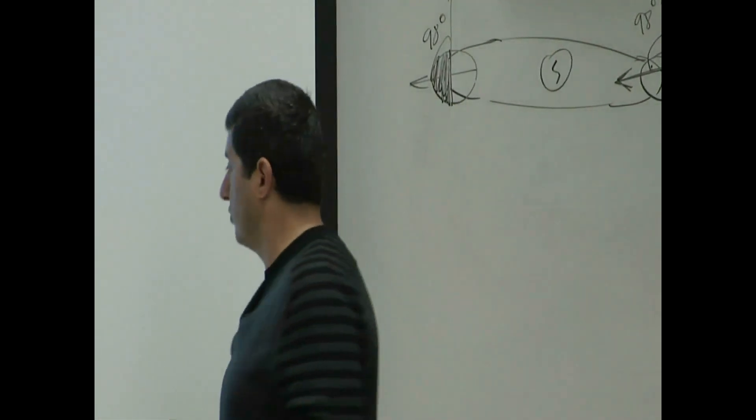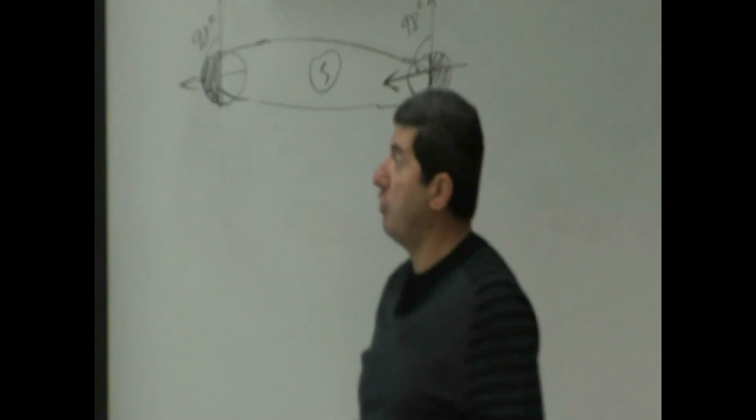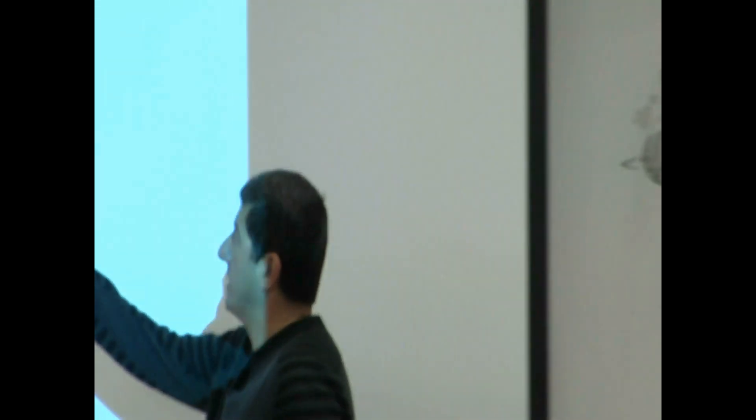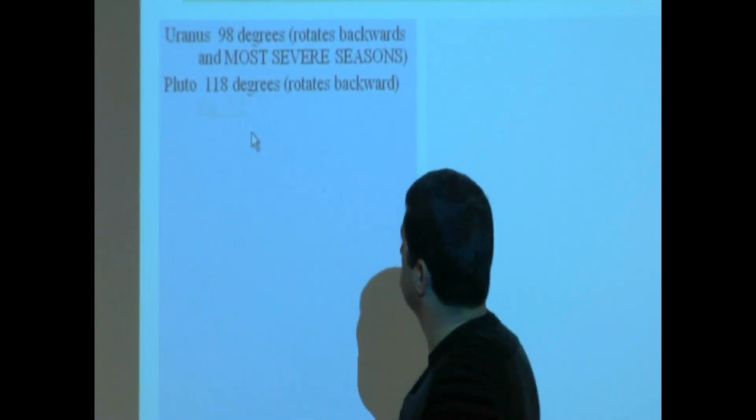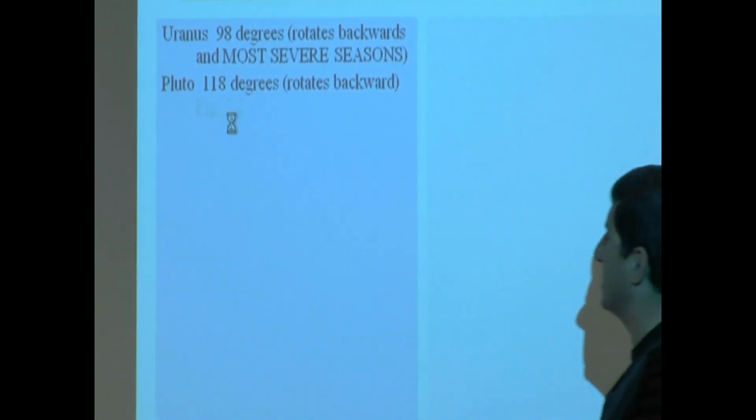So from those three planets, which ones rotate backwards? Which were greater than 90? It was Venus, Uranus, and Pluto also rotates backwards. It's above 90 at 118.